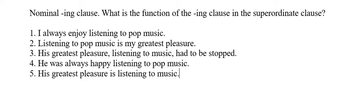Number four: 'He was always happy listening to pop music.' 'He' is the subject and 'was' is the verb, so we're expecting a subject complement. This type of complement is sometimes known as an adjectival complement because it comes after 'happy.' We won't worry too much about that — it's a slightly different type of complement. The most important thing is that we notice there is a complement here.